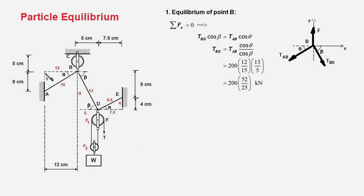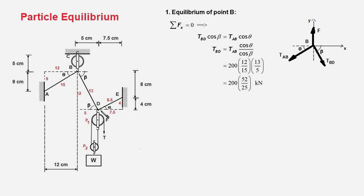Using geometry, we determine the lengths of the cable sections. The horizontal distance is 12 cm and the vertical distance is 9 cm, so AB equals 15 cm from the right-angle triangle. Similarly, the horizontal distance is 12 cm and the vertical is 5 cm, so BD equals 13 cm. From another right-angle triangle with sides 4 cm and 7.5 cm, the length of cable section DE is 8.5 cm. We now write two equilibrium equations: sum of forces in x and y directions equal to zero.